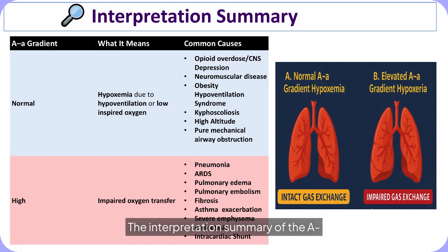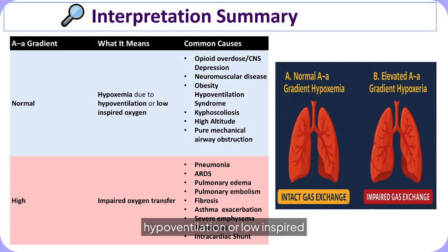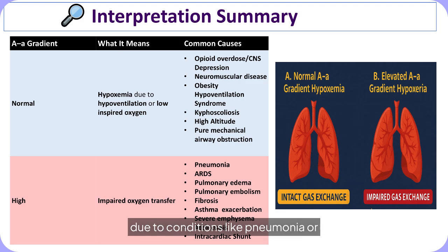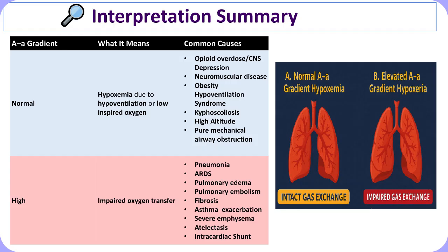A normal alveolar-to-arterial oxygen gradient indicates that the structure of the lungs and the alveolar-capillary membrane are functioning properly, so hypoxemia in this setting is usually caused by reduced ventilation or reduced-inspired oxygen rather than a defect in gas transfer. A high alveolar-to-arterial oxygen gradient reflects impaired movement of oxygen from the alveoli into the blood due to conditions such as pneumonia, acute respiratory distress syndrome, pulmonary edema, pulmonary embolism, interstitial fibrosis, atelectasis, or severe emphysema, all of which disrupt oxygen diffusion or create ventilation-perfusion imbalance, resulting in poorly oxygenated arterial blood despite the alveoli often containing adequate oxygen.